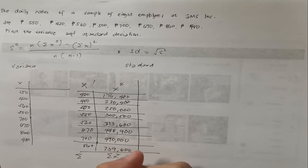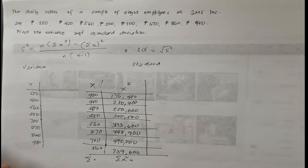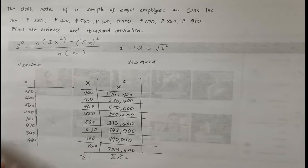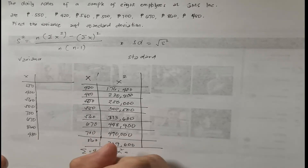Once we're done with that, the next thing we are going to do is get the summation. We will get the summation of the first column — the summation of X. If you'd like to know tricks for getting the summation using a calculator shortcut, check my other video. Let's start adding: 420 plus 480 plus 500 plus 550 plus 560 plus 670 plus 700 plus 860. Our summation of X is 4,740.